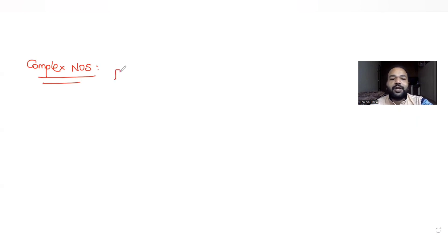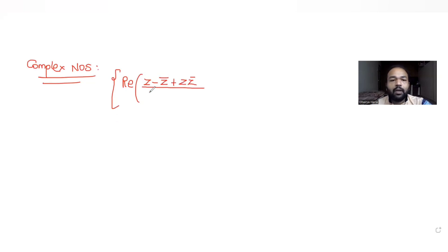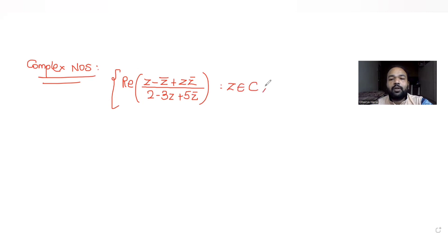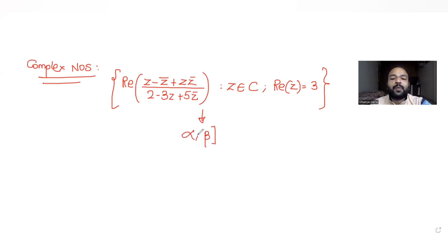the question tells us that a set is present which has the real part of an expression. The expression given is: (z minus z-conjugate plus z times z-conjugate) divided by (2 minus 3z plus 5 times z-conjugate). It is told that z belongs to the complex numbers, and additionally that the real part of z is equal to 2. This set is equal to the interval (alpha, beta], which is open at alpha and closed at beta, meaning the real part of the expression is greater than alpha but less than or equal to beta.